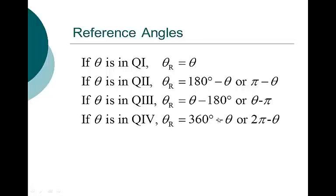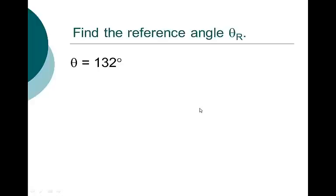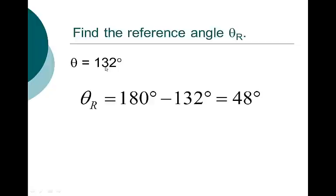Find the reference angle theta sub r for theta equal 132 degrees. Well, 132 degrees is in quadrant 2. So we take 180 degrees minus 132 degrees and we get 48 degrees. That's the reference angle. If I know the sine, cosine, and tangent of 48 degrees, then I know the sine, cosine, and tangent of 132 degrees — I can play with the positives and negatives later.